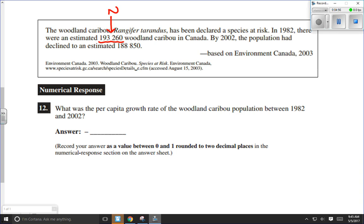By 2002, the population had declined to an estimated 188,850. So this is what the population has changed to. That's not our delta N, that's not what the population change was. That's what our new population is. In this case, we're not given mortality, natality, immigration or emigration. We're just given the total of all those things. We're given what the population was, so we're going to have to do a quick calculation to figure out delta N.